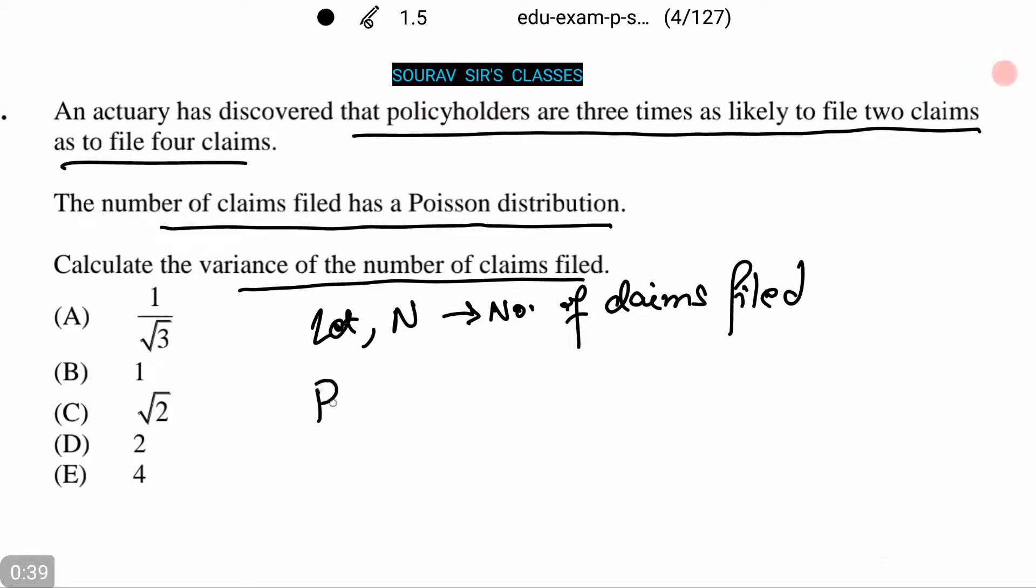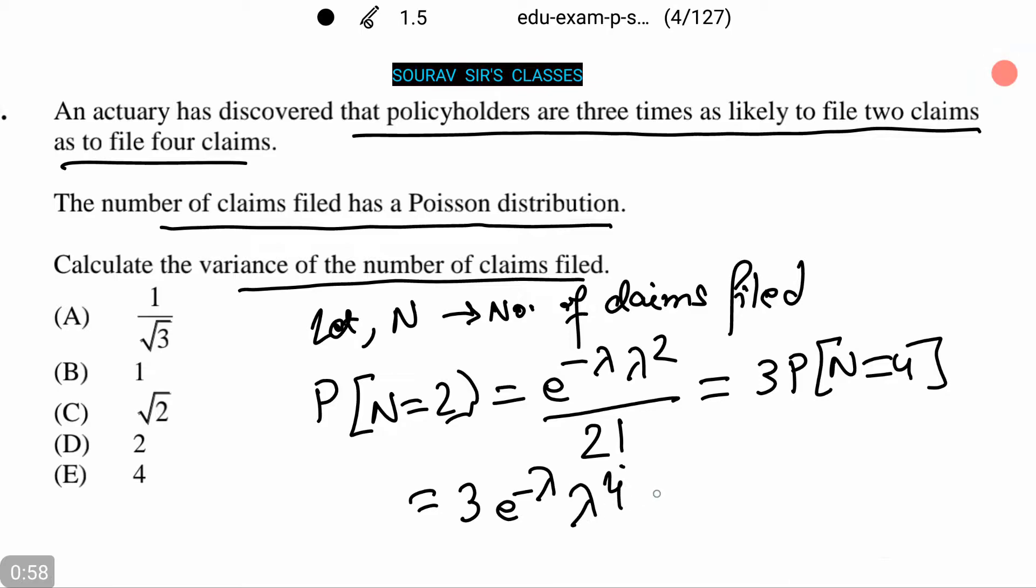Now, we are given probability N equals 2 is e to the power minus lambda times lambda squared over 2 factorial, and this equals 3 times P(N=4), which equals 3 e to the power minus lambda times lambda to the power 4 over 4 factorial.